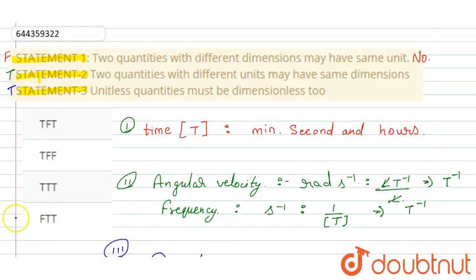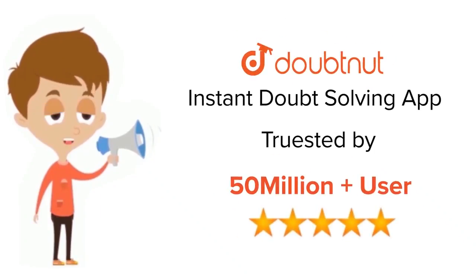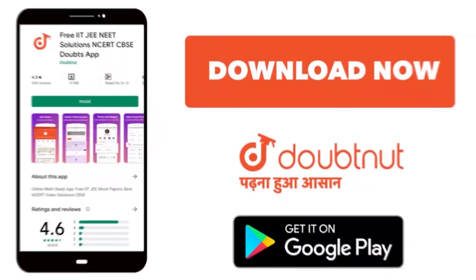So our option D is correct. Thank you. For class 6 to 12, IIT-JEE, and NEET level, trusted by more than 5 crore students, download Doubtnet app today.